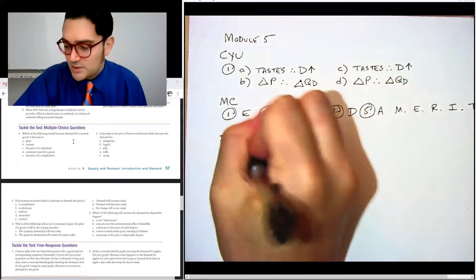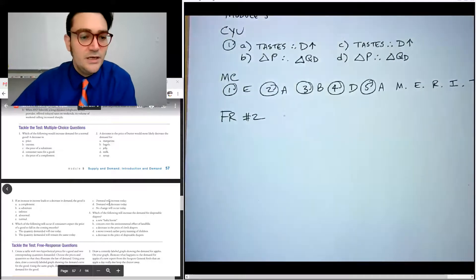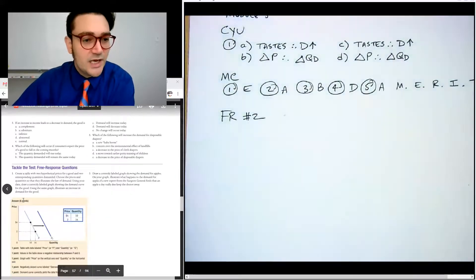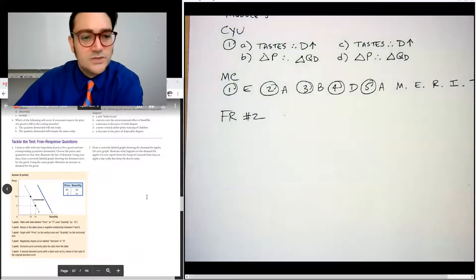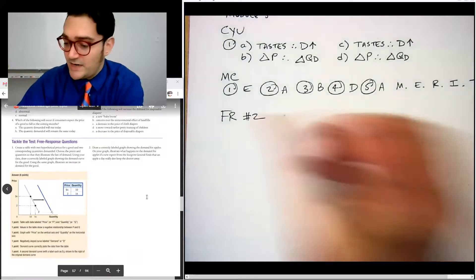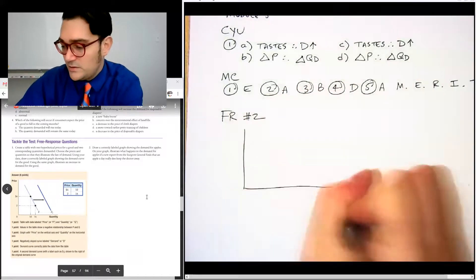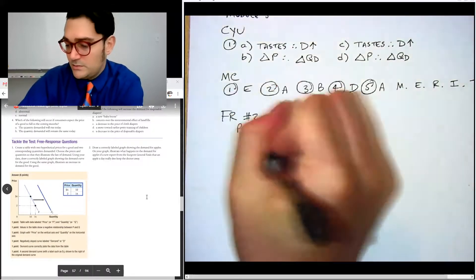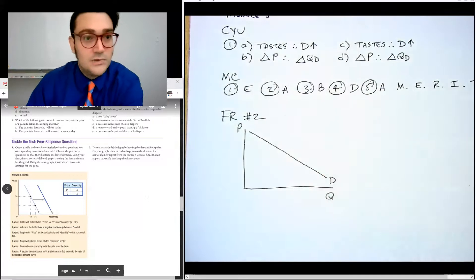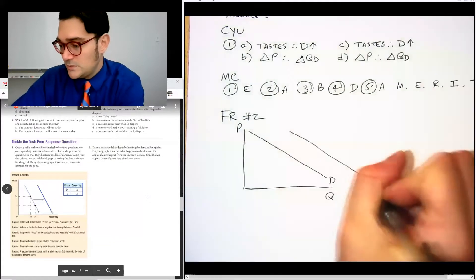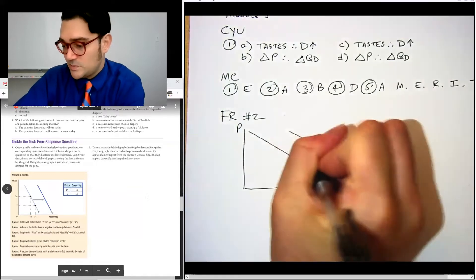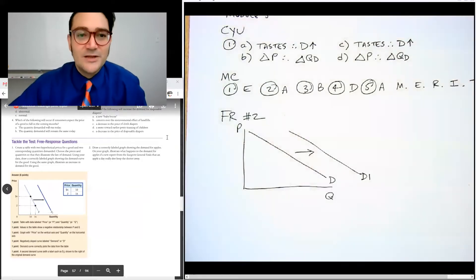Okay. Now let's talk free response, number two, and we'll get you on your way. This is an okay first one. I think it's kind of a pain. If you read it over, it makes sense. Number two, just draw a correctly labeled graph showing demand for apples. Okay. Q and P and demand done, on your graph. Illustrate what happens to demand for apples if a report says that an apple a day really does keep the doctor away. Well, that would increase demand. So D one, all done. See you next time.